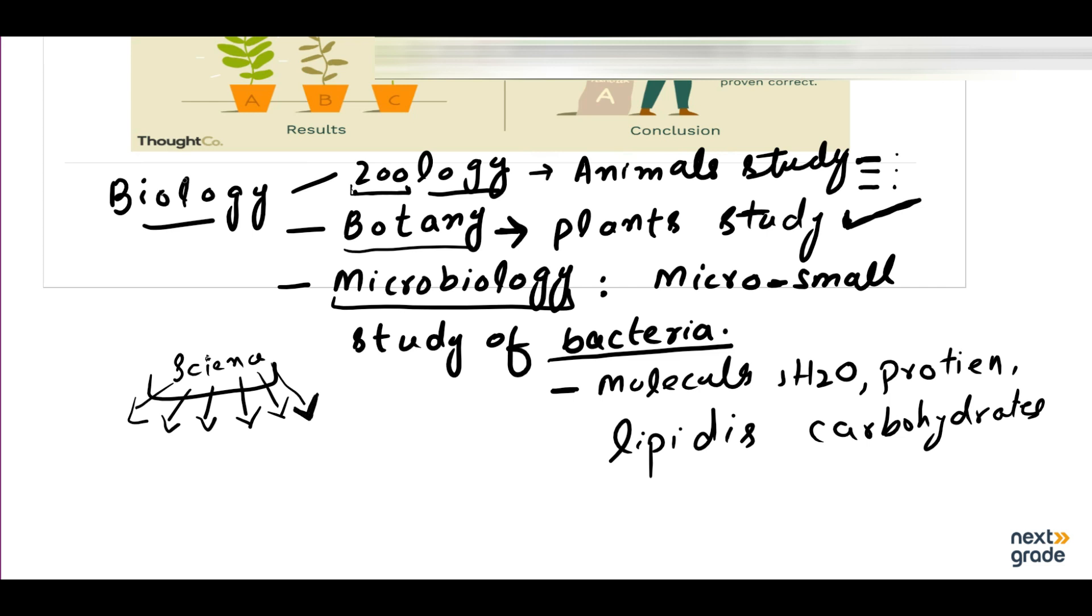Biology is very vast and difficult to study. Before we collect any experiment, we need data, experiments, and conclusions. It is difficult to do it all together. So we divide it in different types and divisions: biology, zoology, botany, and microbiology. We study animals and related experiments in zoology, plants in botany, and bacteria and small organisms in microbiology.